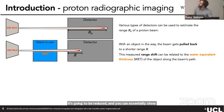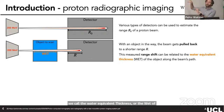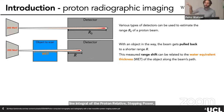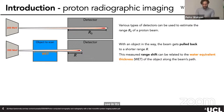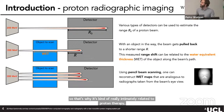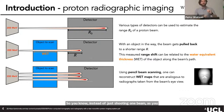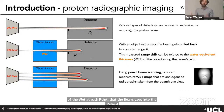If you place a patient between the beam and the detector, the beam gets pulled back to a shorter range because the protons lose energy crossing the patient. You can show that the measured range shift can be related to what we call the water equivalent thickness, or WET, of the patient along the beam spot. The WET is defined as the line integral of the proton relative stopping power along the beam spot — it gives an idea of what the proton beam sees in its path.